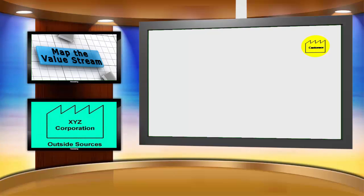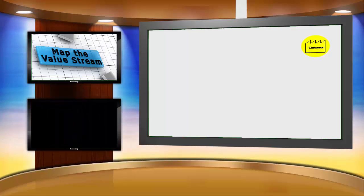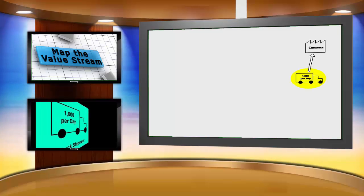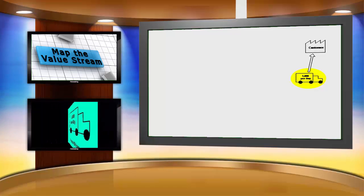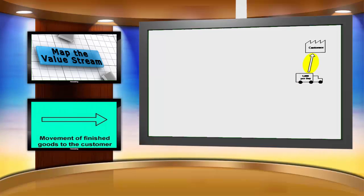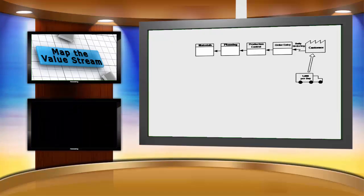Mock Company has a customer, identified in our map by using a material icon that represents an outside source. This type of icon can be used to show a customer, a supplier, or an outside manufacturing process. The customer demand is currently 1,000 pieces per day, identified by another material icon used to represent the truck shipment. The text on the icon notes the frequency of shipments. The arrow is also a material icon representing movement of finished goods to the customer. The customer sends in daily orders and they are processed.